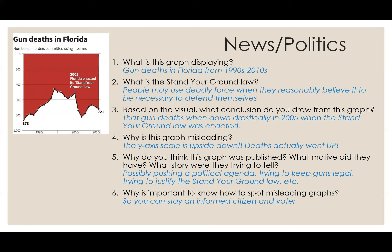Based on this visual, what conclusion do you draw from this graph? Before looking at anything else, I would say gun deaths look like they're going up, but in 2005 when the stand your ground law was enacted, it shoots right down. My initial reaction is that the stand your ground law looks like a great thing to implement because the gun deaths went down. But why is this graph misleading? If you look closely, the y-axis has been flipped upside down — instead of going from zero up to 800, it's going the other way. So this graph is completely upside down, and actually deaths have gone up since the law was enacted. In 2005 they were around 500, and then the next big jump down on the flipped axis was actually over 800.